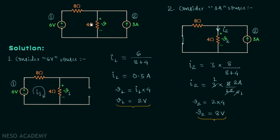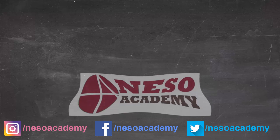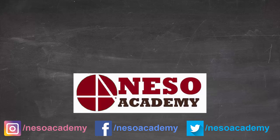The net voltage across the resistor, V, equals V1 plus V2 from the superposition theorem. We know V1 is 2 volts and V2 is 8 volts, so V equals 2 plus 8, which is 10 volts.